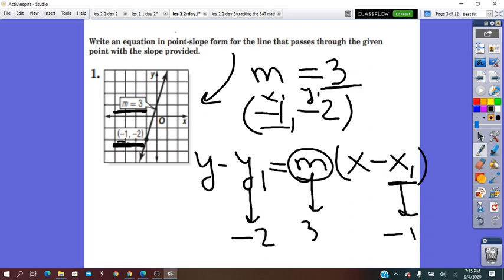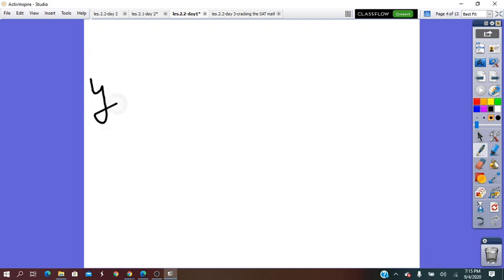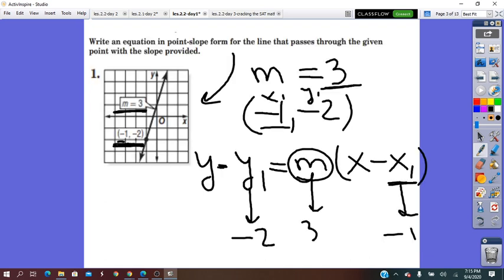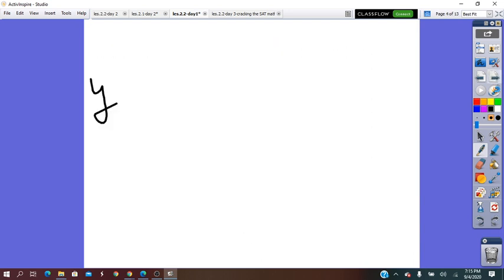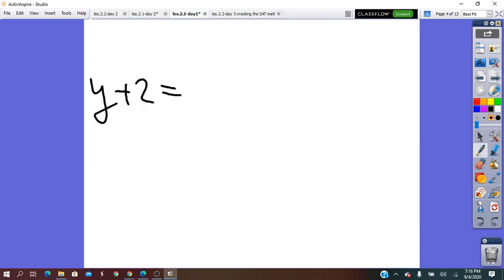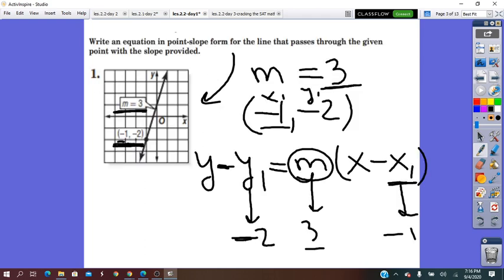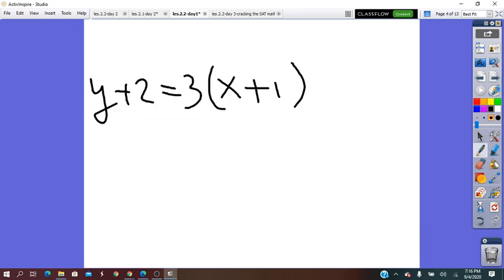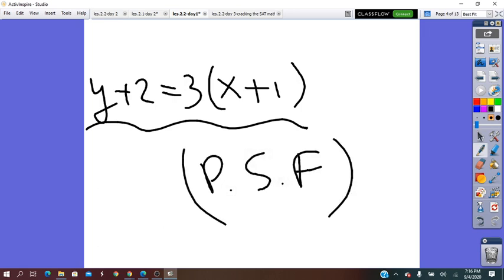I will get y minus a negative, it will be plus 2, positive 2, equals. The slope is 3, so I put 3 times, open bracket x, negative negative it will be positive, plus 1. And this is the point-slope-form of the line.